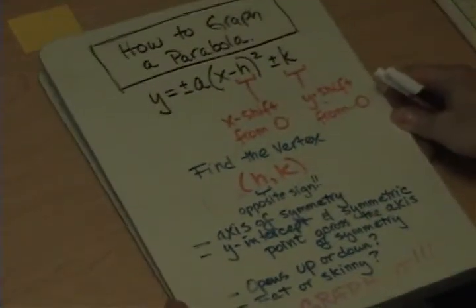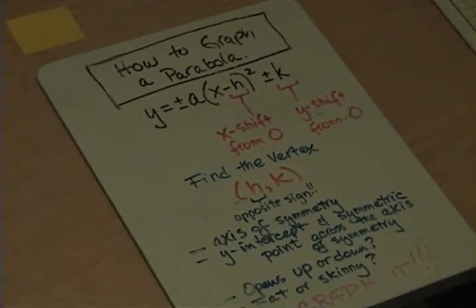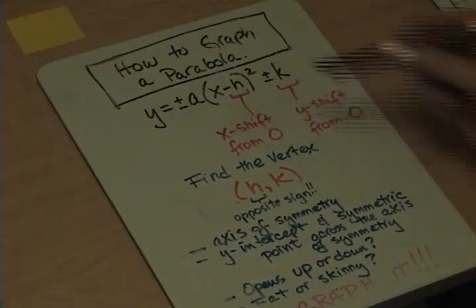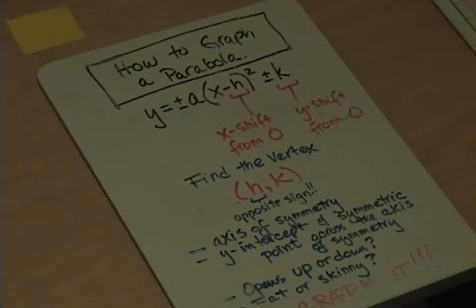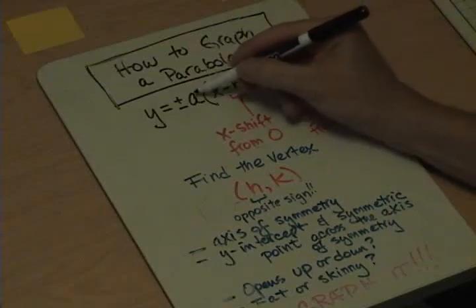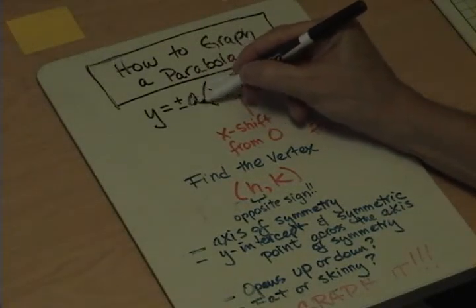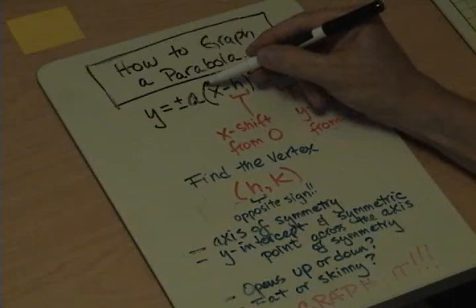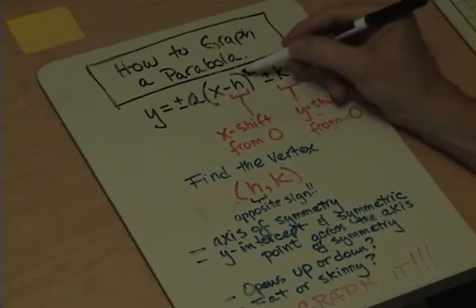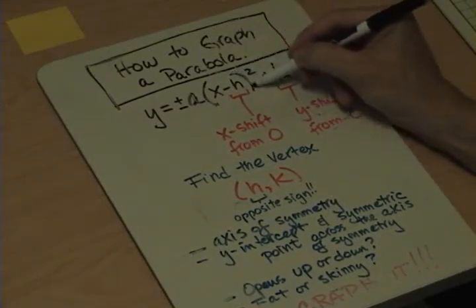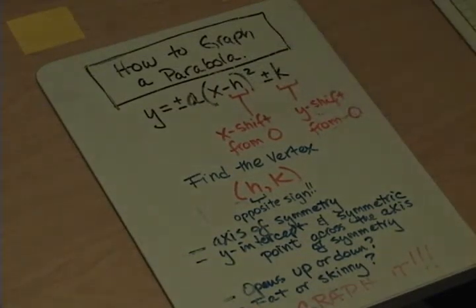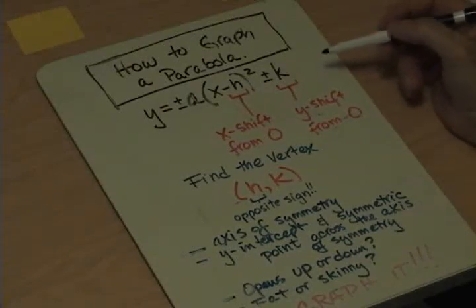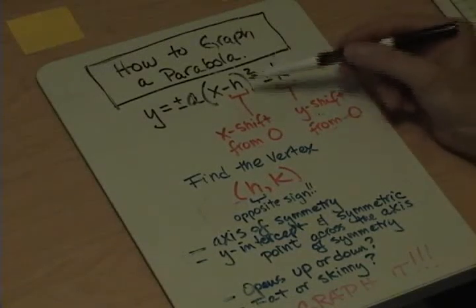Let's take a look at this. This is a general outline of how to graph a parabola. You have a problem in vertex form, and what you have is y is equal to plus or minus all this stuff involved in our knowing what's going on when we graph a parabola. There's a poster — you can see another video on the website — but right here we'll go through it.